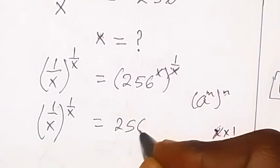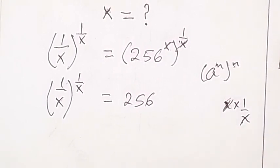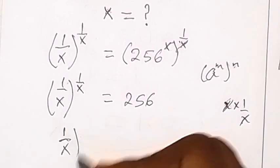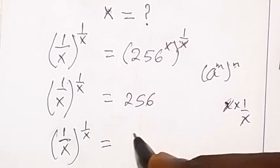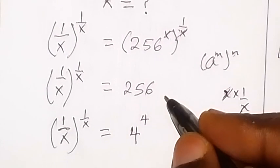And we have 256 left here. And then when we look at this again, we can see we have 1 over x raised to power 1 over x equals to, let's change 256 to base 4, that's 4 raised to power 4.